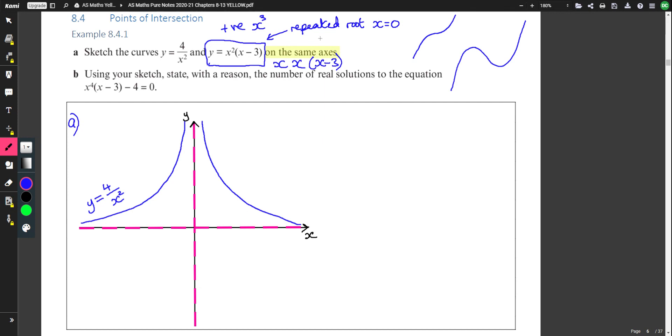The other root will be x equals 3. That is the other x value that will make one of the factors 0. So turning point when x is 0, and it will go through the x-axis when x is 3.